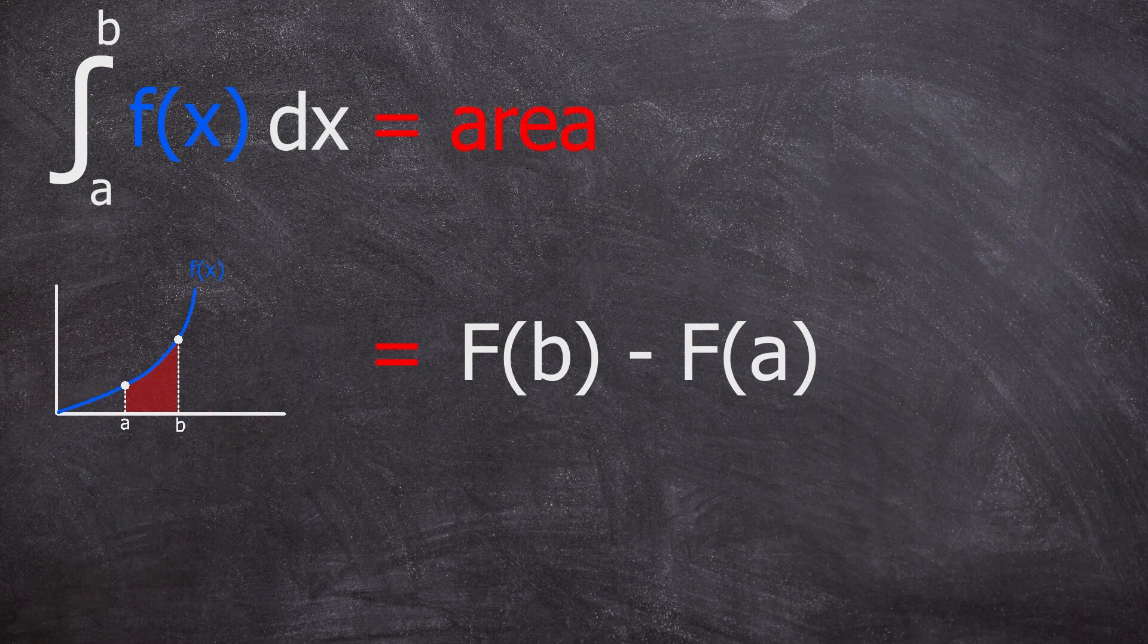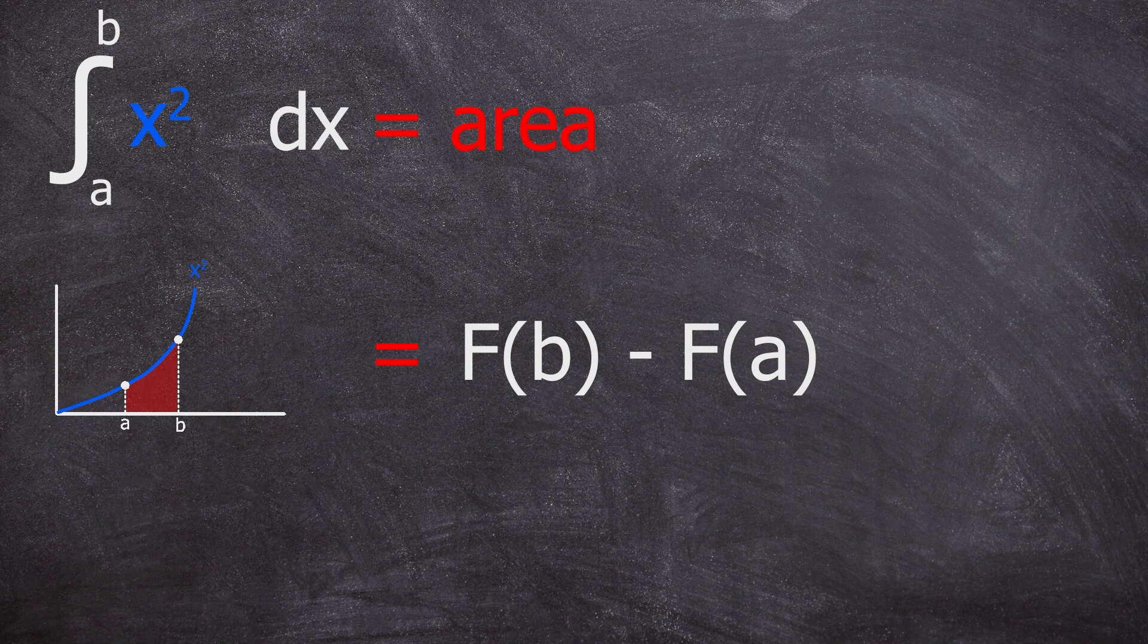In this example, the function will be x squared, with the limits a equals 2 and b equals 5.